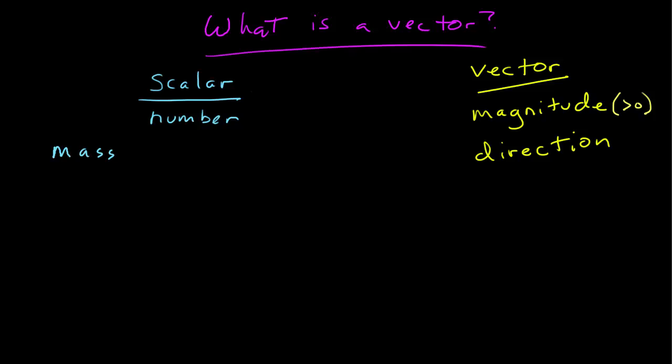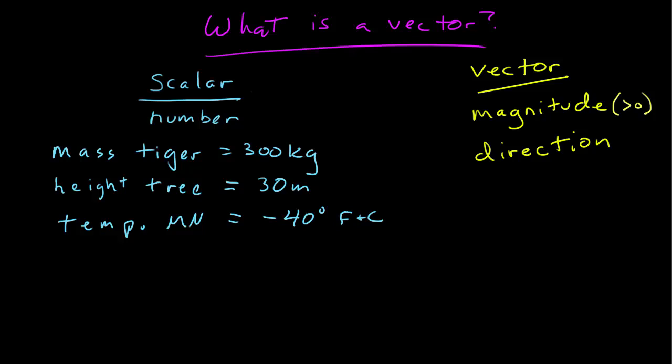For example, the mass of a tiger might be 300 kilograms. That's just a number and a scalar. Or the height of a tree might be 30 meters, and that's just a number. Or maybe the temperature in Minnesota might be negative 40 degrees. Now that could be Fahrenheit or Celsius, since they're both the same at negative 40. So it can be positive or negative. It can have units or not have units, but it represents just a number.